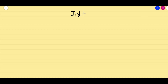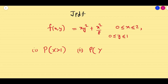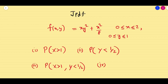Dear friends, in this session we are going to solve a problem on joint probability density function. The function given is f(x, y) = xy² + x²/8, where x lies between 0 to 2 and y lies between 0 to 1. We have to compute: probability of X > 1, probability of Y < 1/2, probability of X > 1 and Y < 1/2, and probability of Y < 1/2 given X > 1.